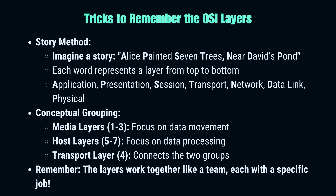Another helpful approach is to group the layers conceptually. The bottom three layers are the media layers, focusing on data movement. The top three layers are the host layers, dealing with data processing. The transport layer in the middle connects these two groups. Think of it as a towering layer cake of digital deliciousness — the bottom three like a hyperspace delivery service, the top three like universal translators in a sci-fi movie, and the transport layer as the jam holding it all together.